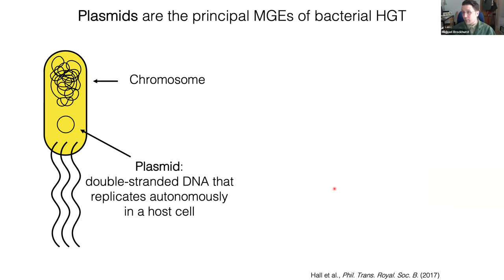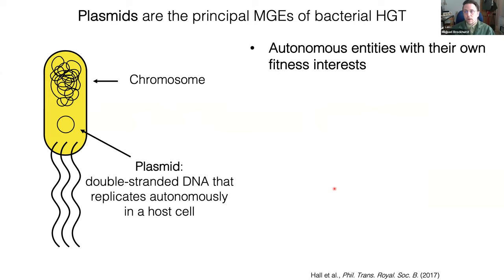I don't need to explain why plasmids are important, but they really are important in terms of bacterial evolution, carrying genes around and evolutionary innovation. Plasmids sit separate from the chromosome — they're semi-autonomous and they replicate themselves. This autonomous nature is really interesting from an evolutionary biology perspective.